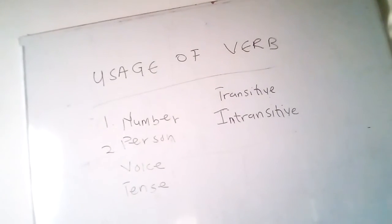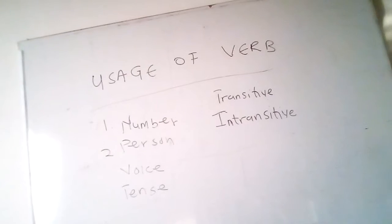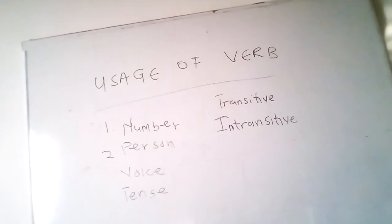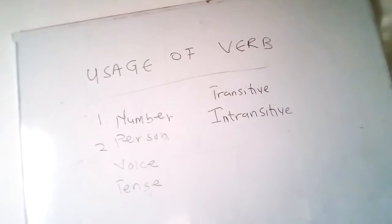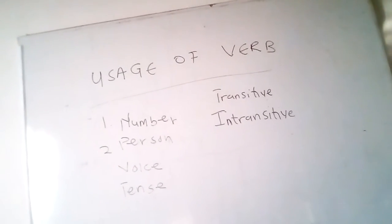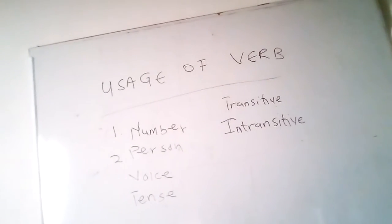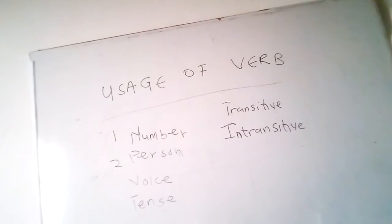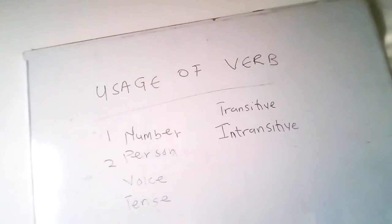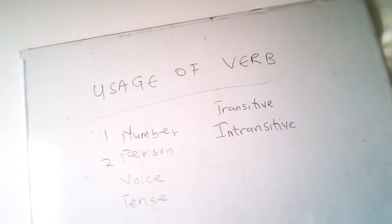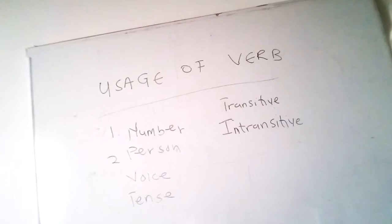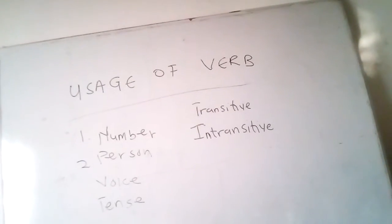A verb is in the passive form when the subject is the receiver of the action. Simply put, when the subject of a sentence represents the receiver or sufferer of the action, the verb is said to be in the passive voice. For example: 'The secretary was slapped by her boss' — the subject is 'the secretary', who suffered the action 'slapped'. Note that the doer is not the subject. Verbs are used more in the active voice and less frequently in the passive voice.